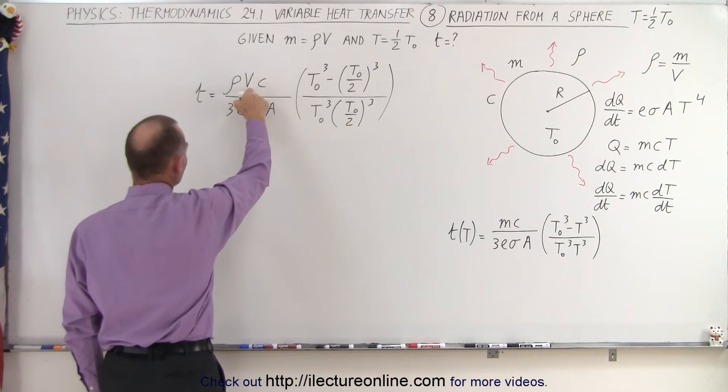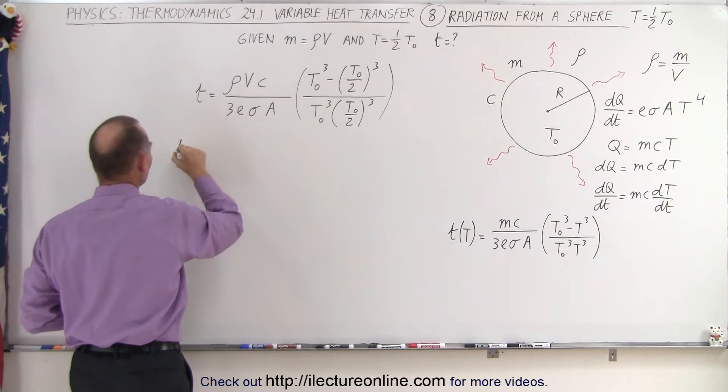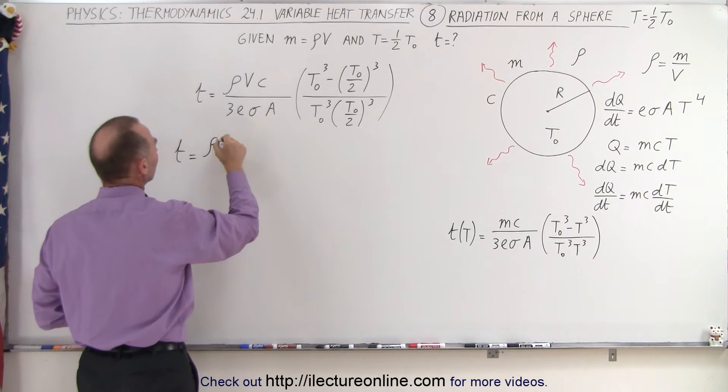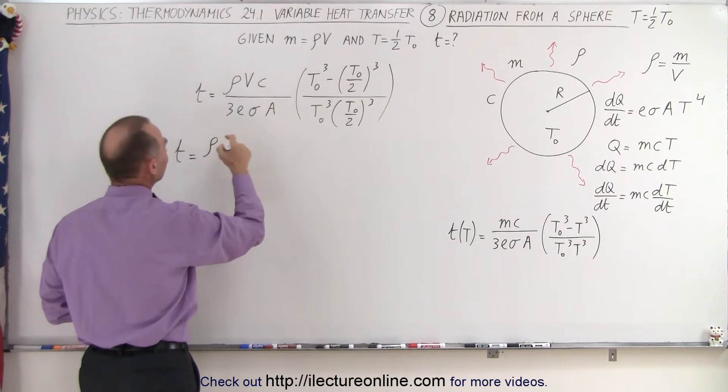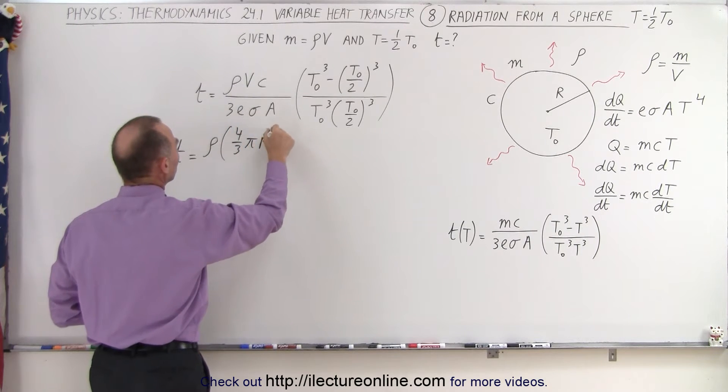First of all, we're going to replace the volume and the area. This is the surface area of the sphere with the appropriate equations. So this becomes T times the density times the volume, which is four-thirds π r cubed.